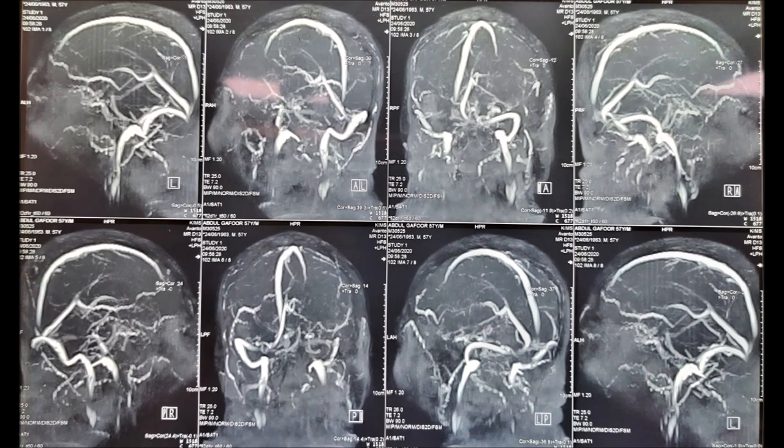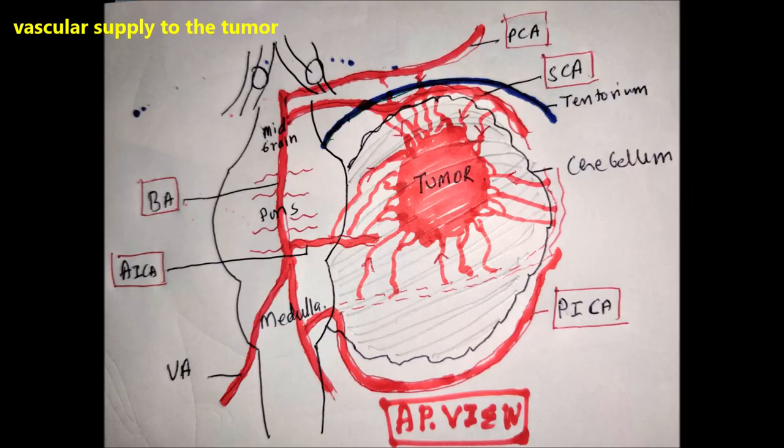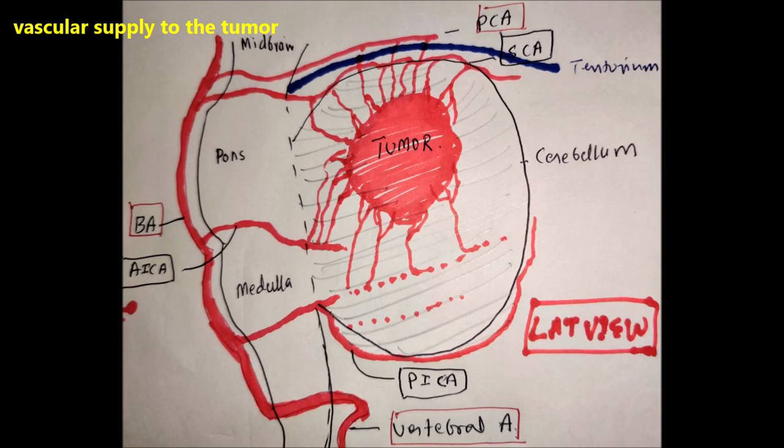Usually these tumors get blood supply from all three vessels — that is, the superior cerebellar artery, anterior inferior cerebellar artery, and posterior inferior cerebellar artery (PICA) — and they have very high vascularity, drawing blood from everywhere.